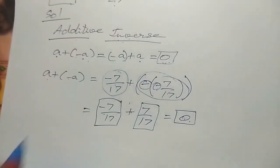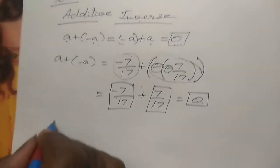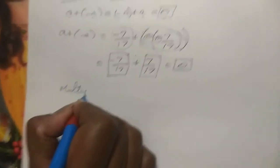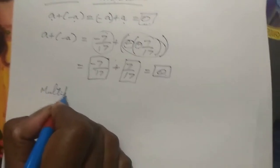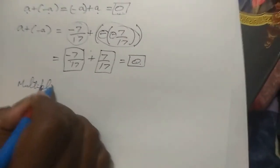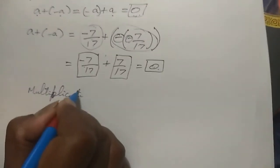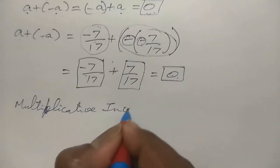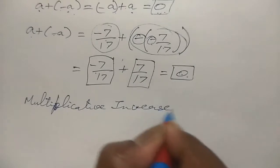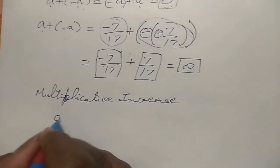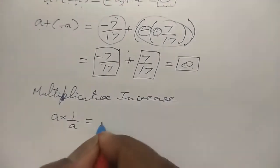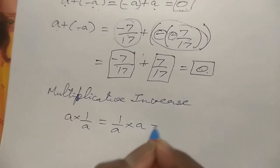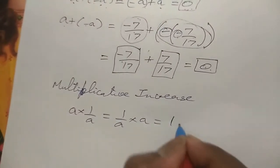Now we go for the multiplicative inverse. The formula is: a into 1 by a equals 1 by a into a equals 1.